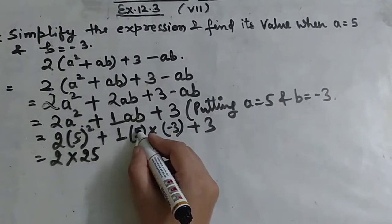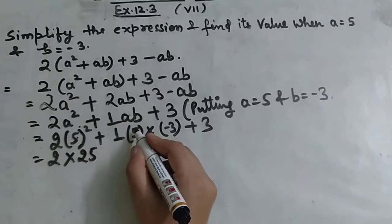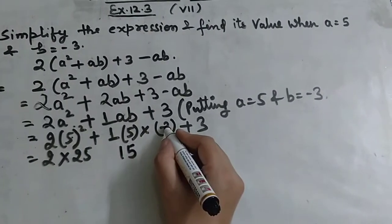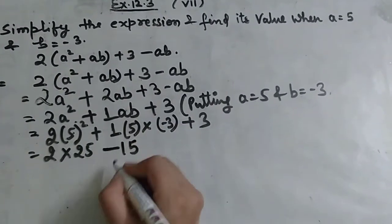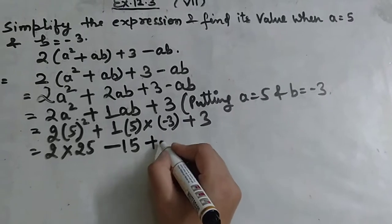Then you have 1 into 5, 5 times 3 is 15. But you can see the minus sign is there, so this will be minus 15. So it will be minus sign, and plus 3.